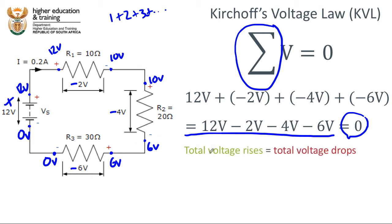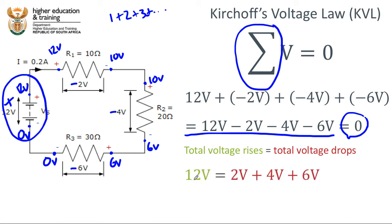So we can consider that the total voltage rises — what's happening in the battery, that's a voltage gain — is equal to the total voltage drops. This 12 volt gain is equal to the 2 volt plus 4 volt plus 6 volt drop. The voltage being put into the circuit by the battery is equal to the voltage drops across R1, R2, and R3. 12 volts equals 2 volts plus 4 volts plus 6 volts.